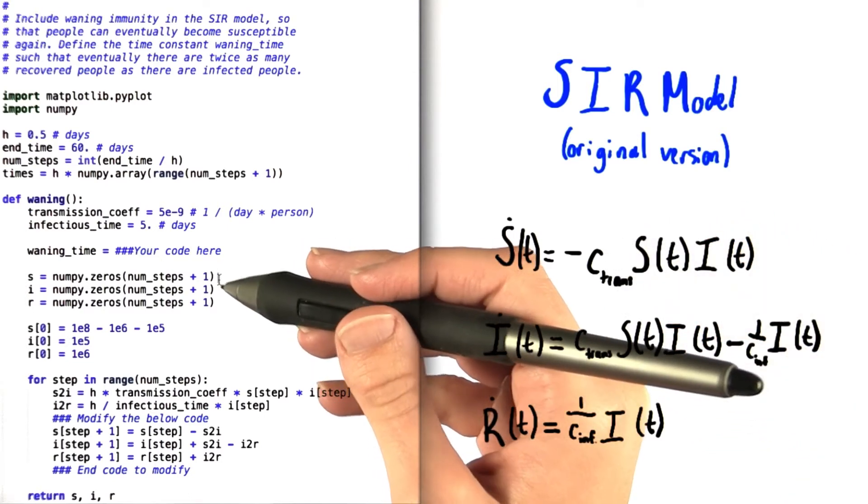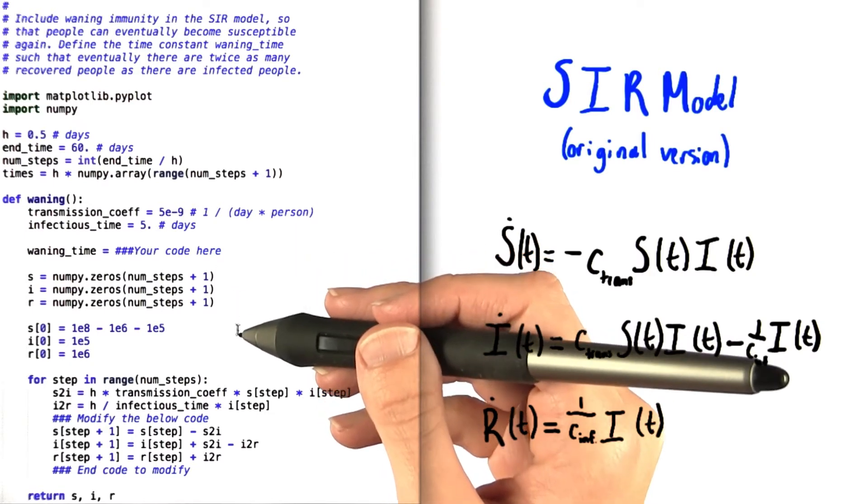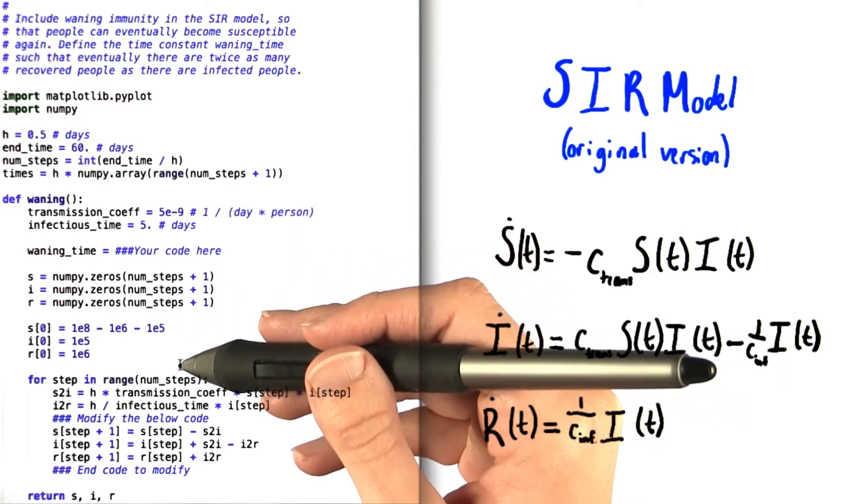We've already created lists for S, I, and R for you, and we've set the initial values for susceptible, infected, and recovered populations right here.